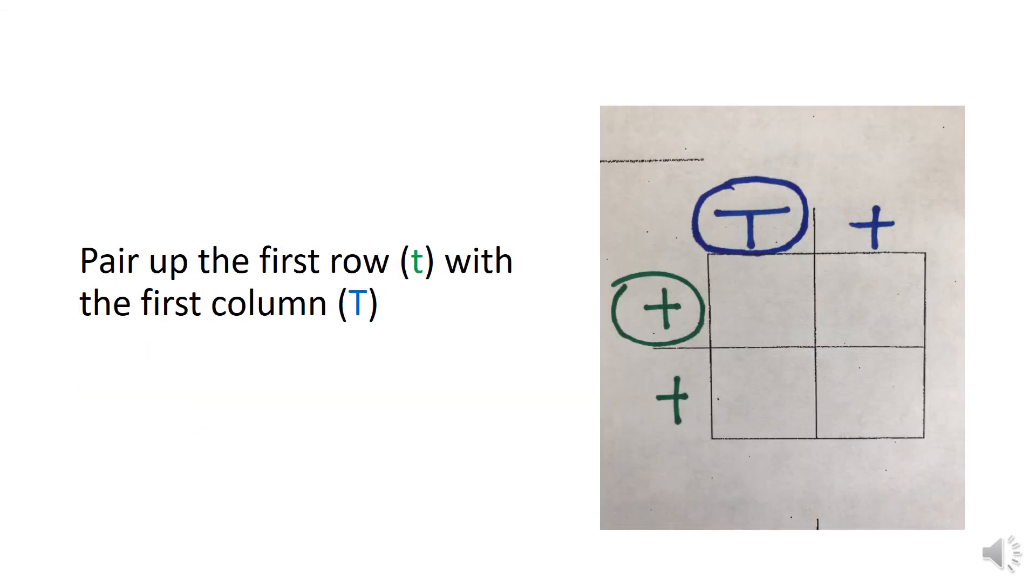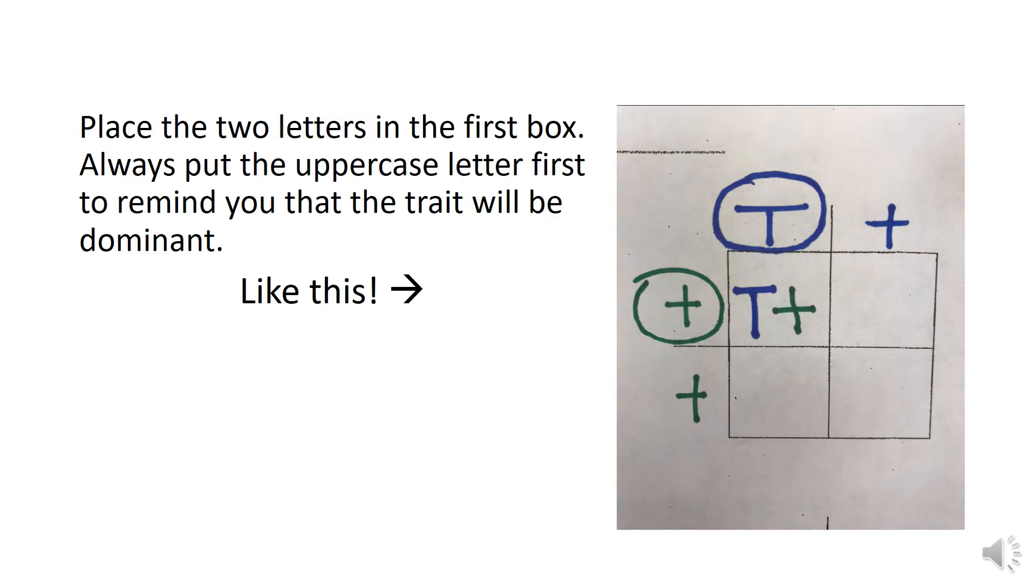For the next steps, make sure you use the template that you made as a guide. Pair up the first row lowercase green t with the first column uppercase blue T. Place those two letters in the first box. Always put the uppercase letter first to remind you that the trait will be dominant.